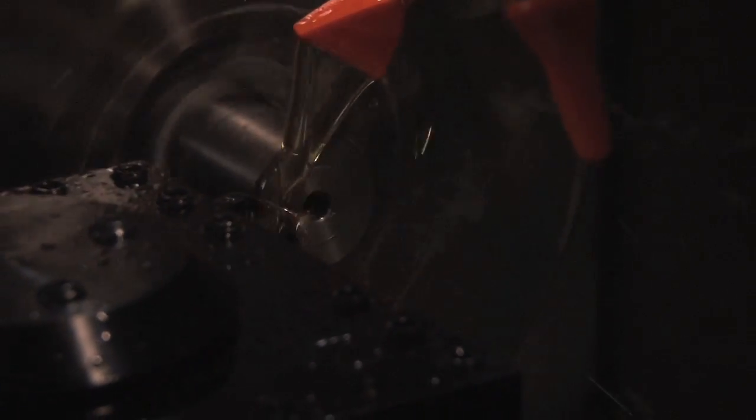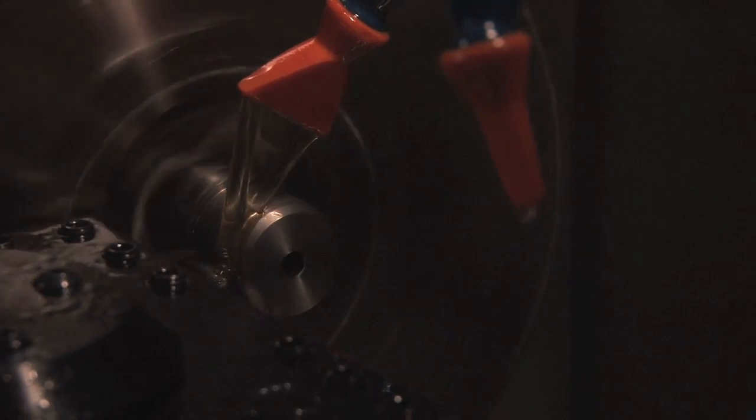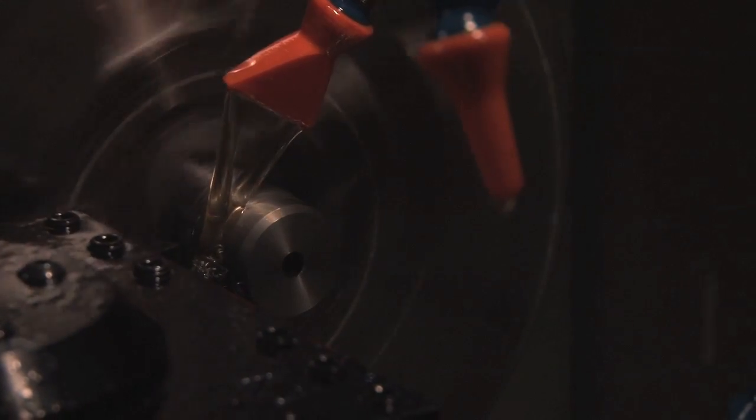The first cutting operation faces the end of the barrel. The next operation turns the barrel shank to the final outside diameter.